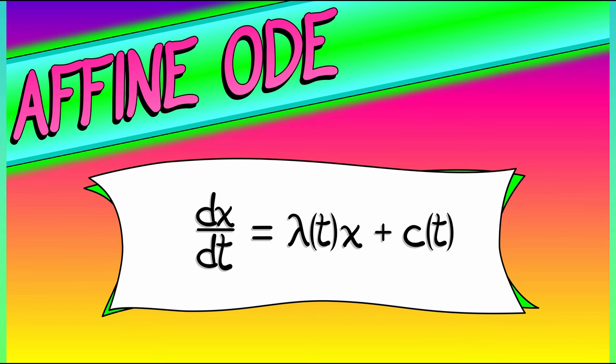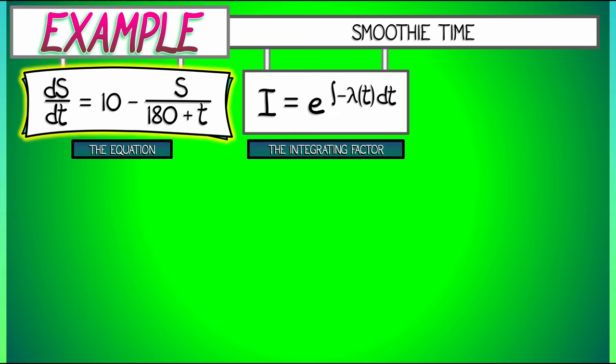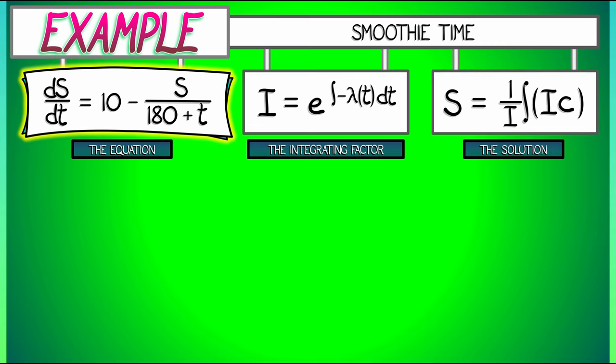Where that integrating factor, recall, is e to the integral of minus lambda. The solution S is given as one over the integrating factor times the integral of I times C. Looking carefully at that affine ODE, we can identify the lambda.